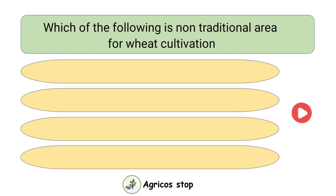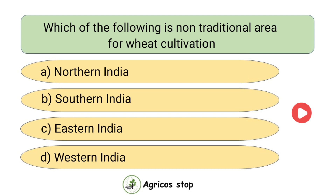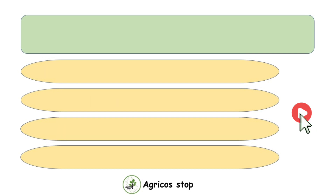Which of the following is the non-traditional area for wheat cultivation? Options are Northern India, Southern India, Eastern India, and Western India. The answer is Eastern India. Eastern India is the non-traditional area for wheat cultivation.